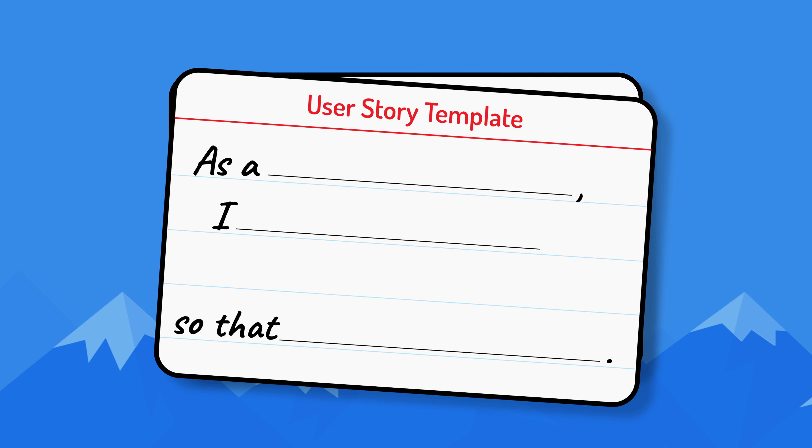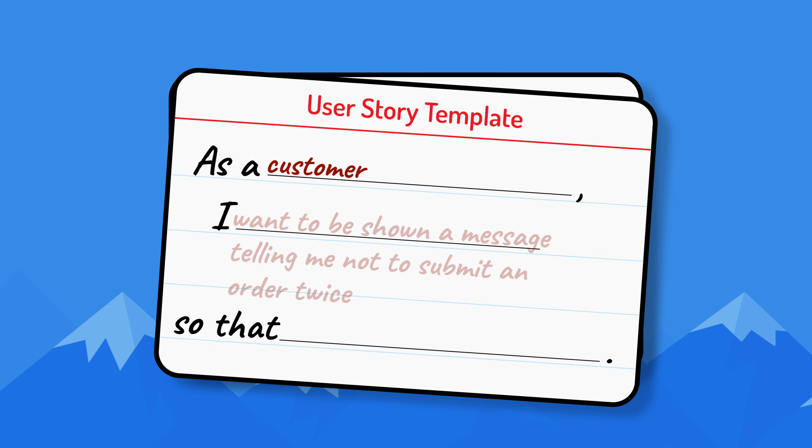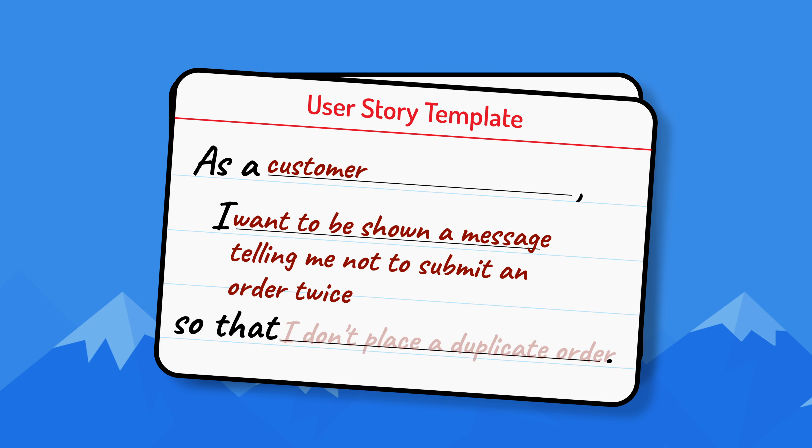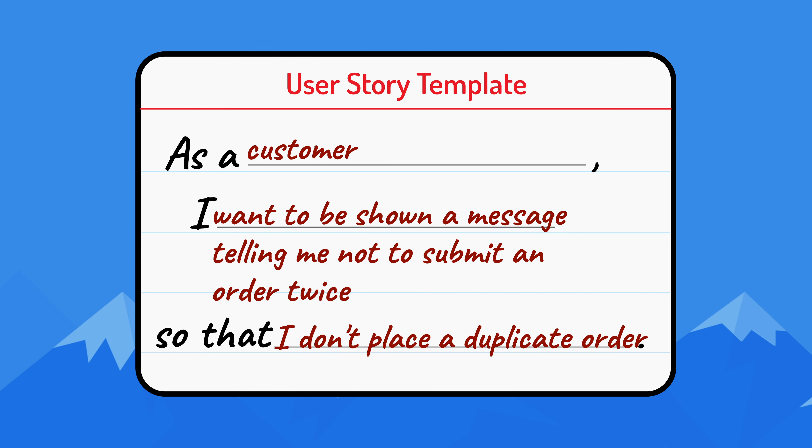This story describes the behavior seen on most e-commerce sites warning a user not to submit an order multiple times. The user story equivalent might be: as a customer, I want to be shown a message telling me not to submit an order twice so that I don't place a duplicate order. The job story is superior here for two reasons. First, this story applies to everyone making a purchase on the site, so it's not important to know this person is a customer. Second, the job story provides more context about when this is happening — when an order is submitted. The user story never tells us when this message is displayed; a team could implement it by adding an FAQ item, which is almost certainly not what the product owner wants.